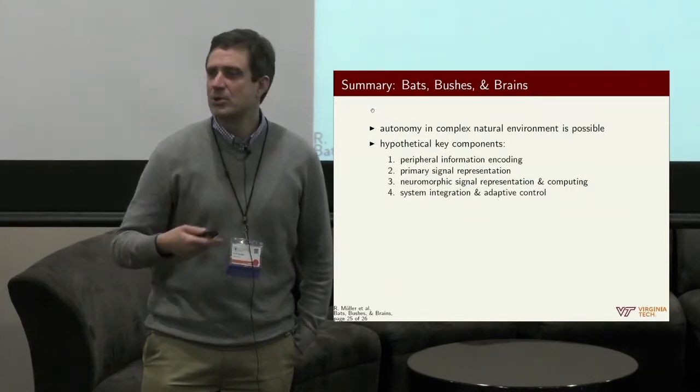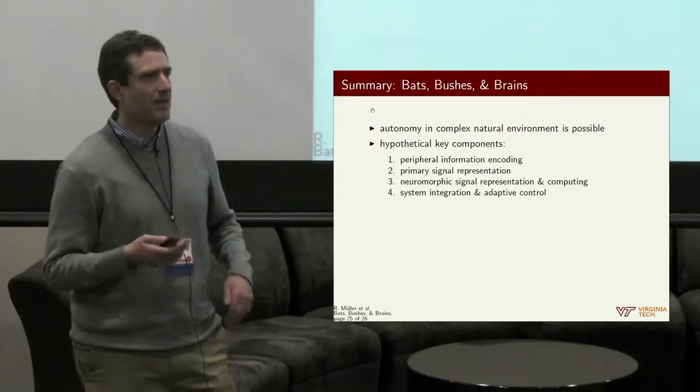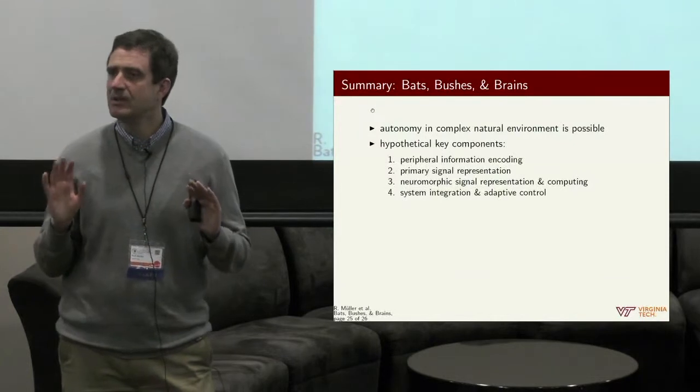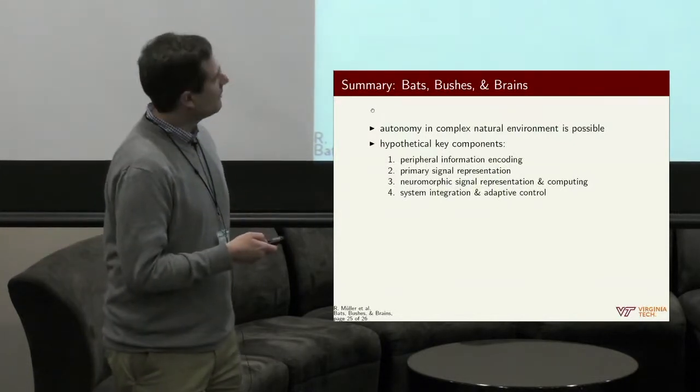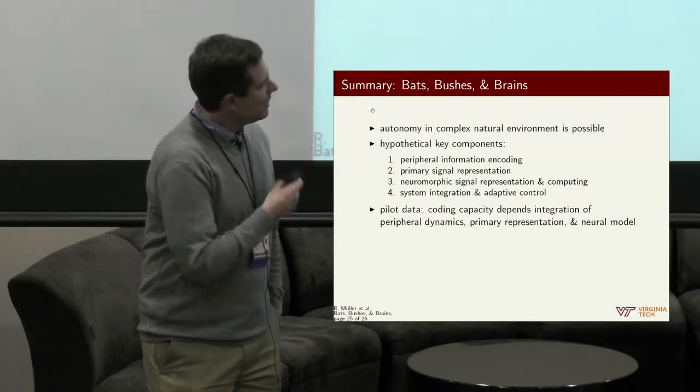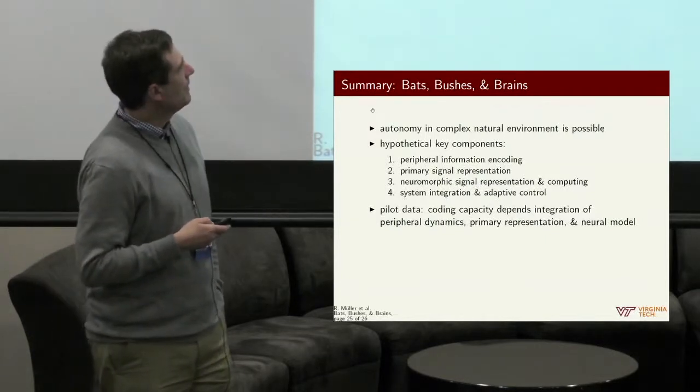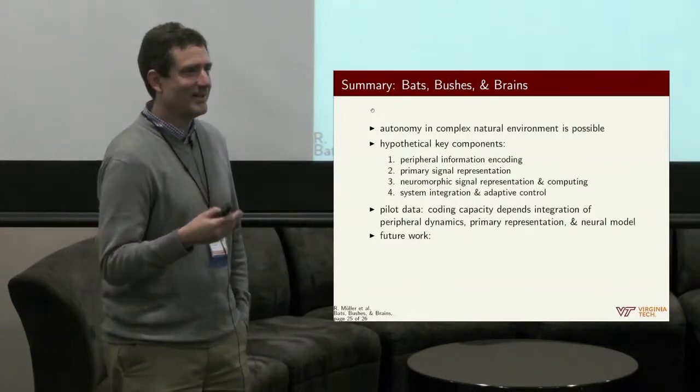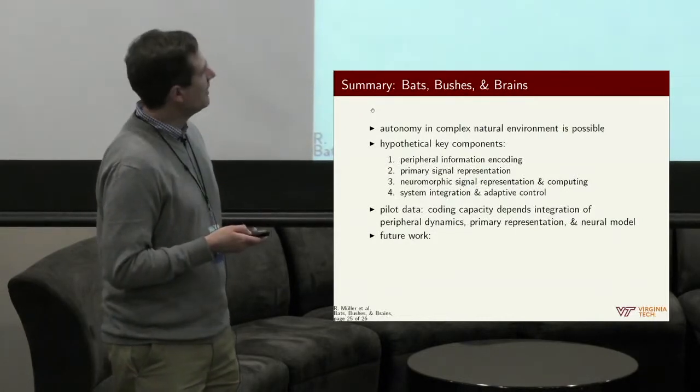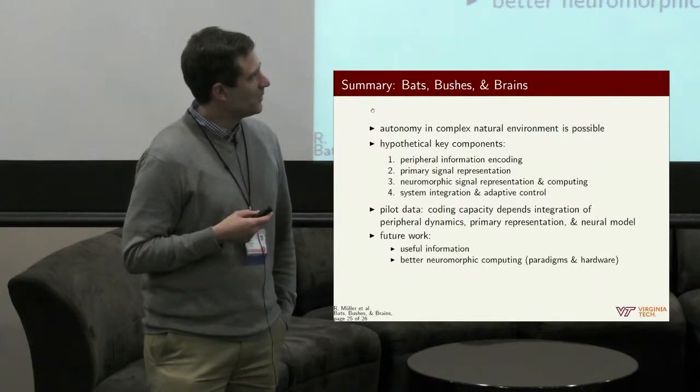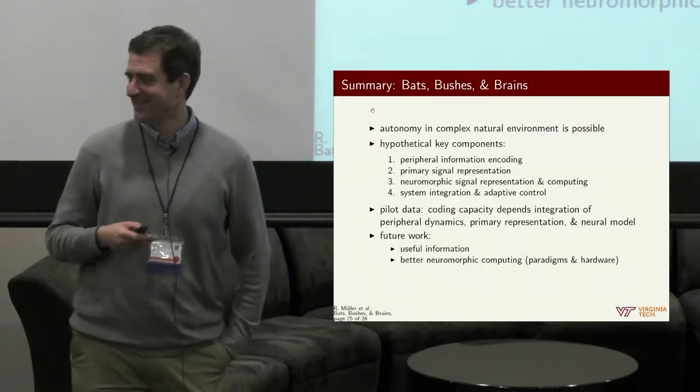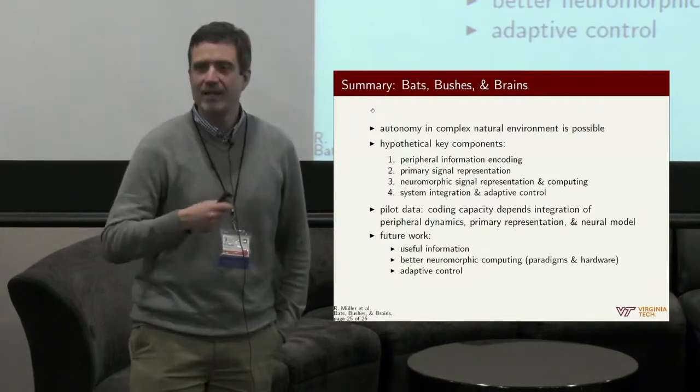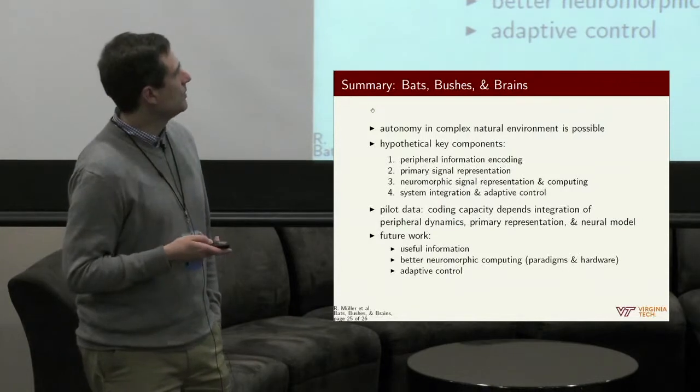Then how do you represent the signal after that, your primary representation, I think that needs some attention. Then how do you do the neuromorphic signal representation, the computing. And then for future work, what we're really interested in is how do you close the loop, how do you control that. If you look at the bat, we have not done that in any depth, but I can tell you for sure from our pilot data, these ear motions, the nose leaf motions, they do change, they constantly change. So the animals have them under control, and how do they do that. That's something that we would like to know. Our pilot data shows that indeed, all these factors have an impact on coding capacity. And then future work is, of course, to look at useful information. Coding capacity doesn't mean all that much, but it's really the quality, the information that you put in there. We want to think about better neuromorphic computing, both in paradigms and in hardware, and that's why I came to this meeting. I hope you can give me some advice on that, or maybe even collaborate. And then the question of adaptive control, how can we actually close the loop between what we get and then what do we do in the periphery. That's all I had to quickly acknowledge my sponsors, and if there's time, I'm happy to take questions.